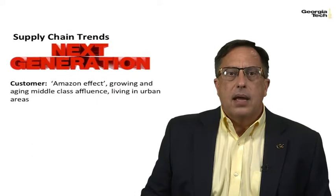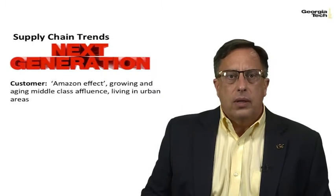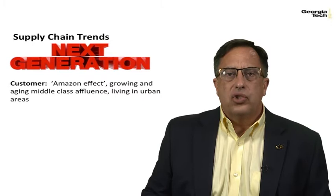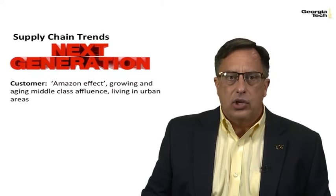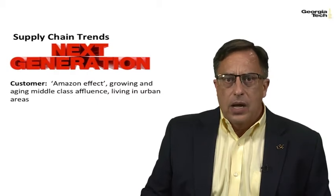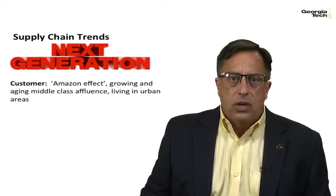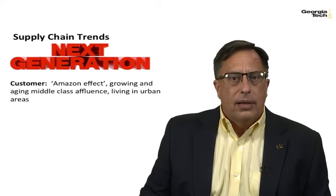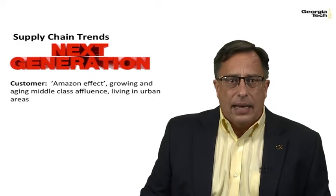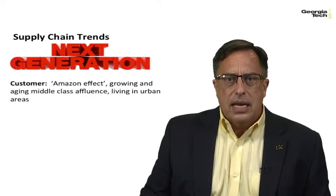Let's begin by discussing a number of trends that are beginning to impact supply chains and will continue to do so in the future. First, on the demand side, next generation customers will continue to be affected by the Amazon effect, which clearly has a huge impact on customer expectations. Today, depending on where you live, you may get a variety of products from Amazon within two hours, a day, or two days. With the growing ability to get anything from books to kayaks without leaving your couch within two hours to two days, there is likely no turning back in terms of customer expectations, and industries need to be responsive.